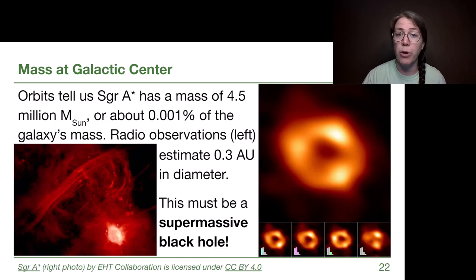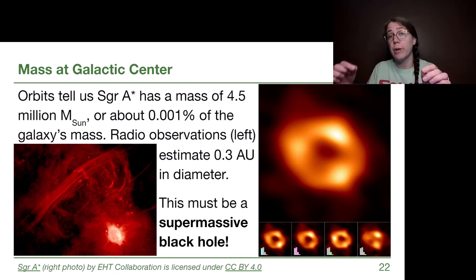So this kind of data tells us the mass: 4.5 million solar masses. And then radio observations of the region give us constraints on how big this object can be. Scientists estimate that this region, this object that we call Sagittarius A*, is at most 0.3 astronomical units in diameter. So basically out to the orbit of Mercury is where this object is. That is a very tiny space for 4.5 million solar masses, and the only object in astronomy that has the density that is required would be a black hole.